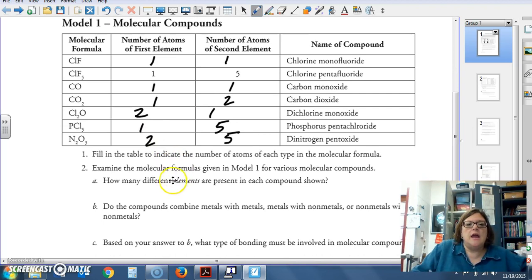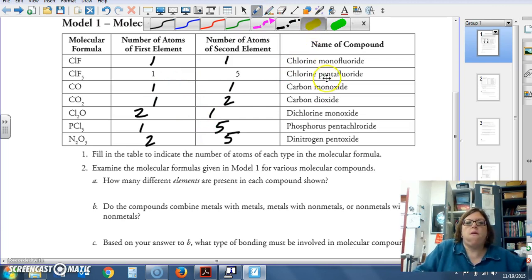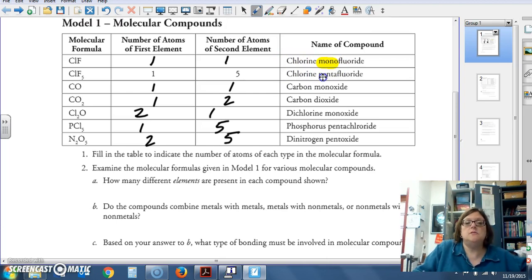Now, examine the molecular formulas. How are the different elements present shown? What are we doing that's different over here? Here we have chlorine monofluoride. So, what do you suppose mono means? No, it doesn't mean kissing disease. We have chlorine pentafluoride. What do you suppose penta means? Carbon monoxide, carbon dioxide, dichlorine monoxide, phosphorus pentachloride, dinitrogen pentoxide. What do you notice?